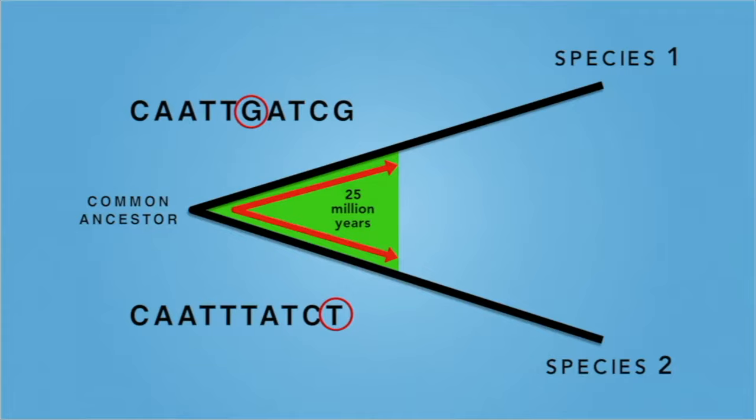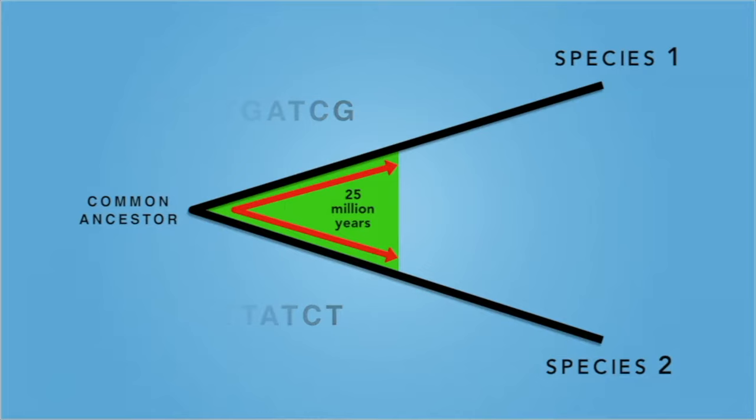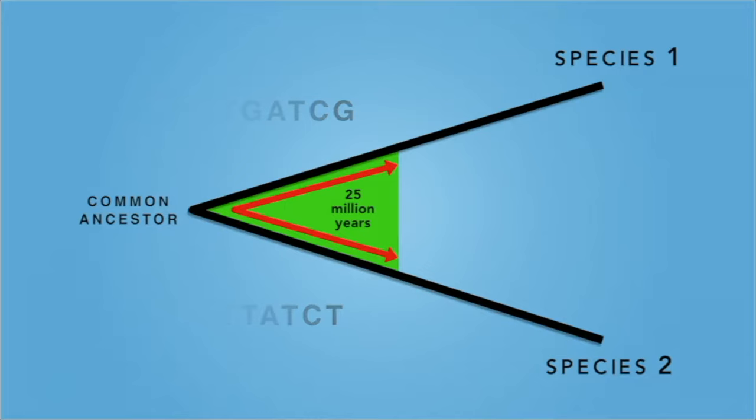They observe that the species differ in the DNA of this molecular clock gene by four bases. If the species differ by four bases, they must have diverged from a common ancestor around 50 million years ago.